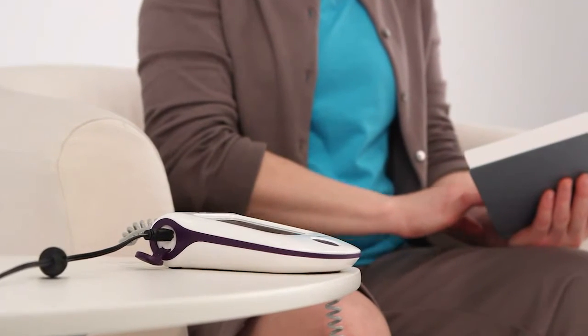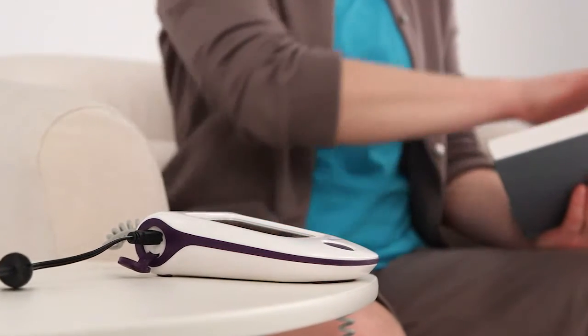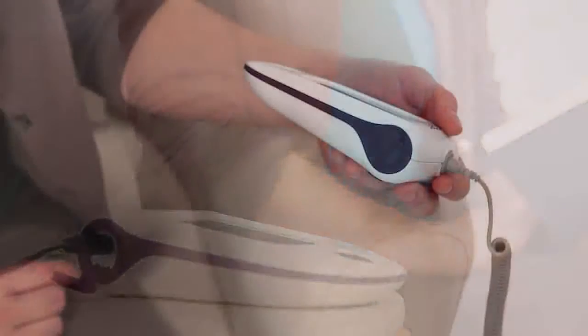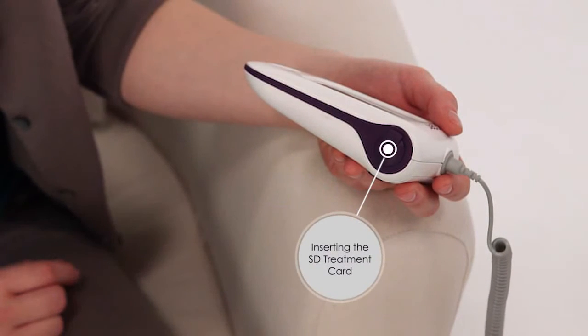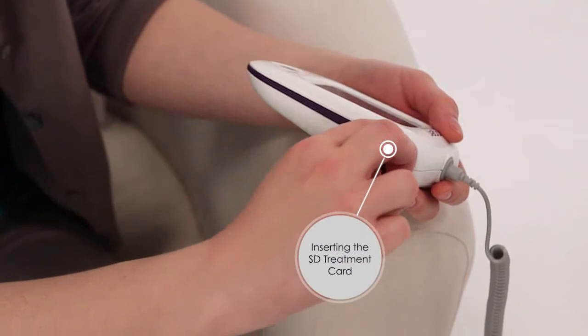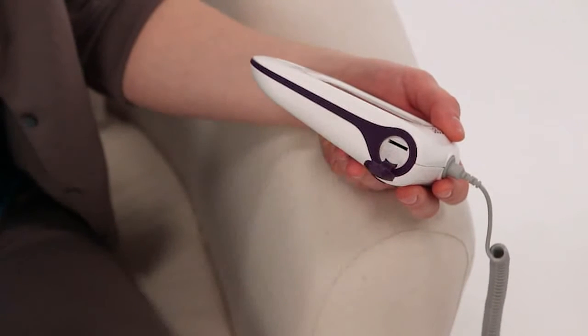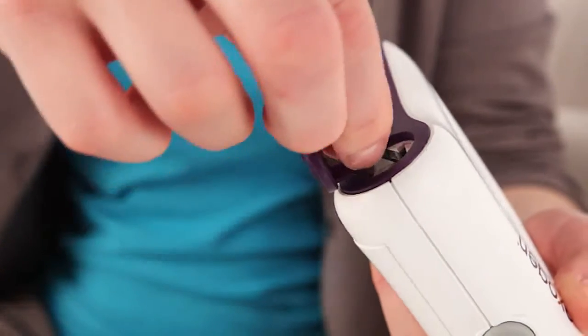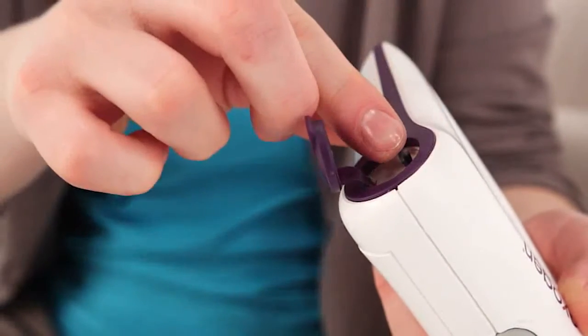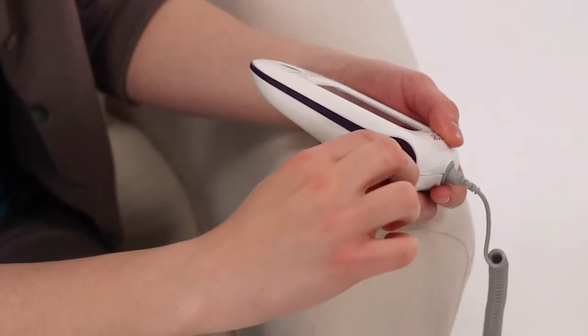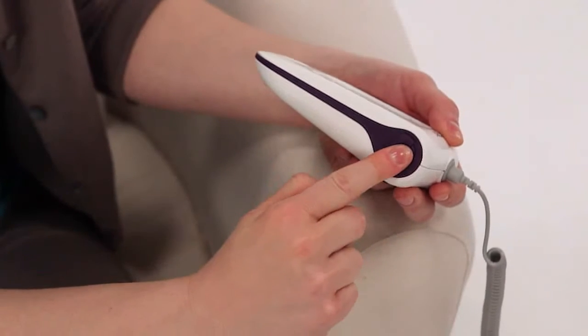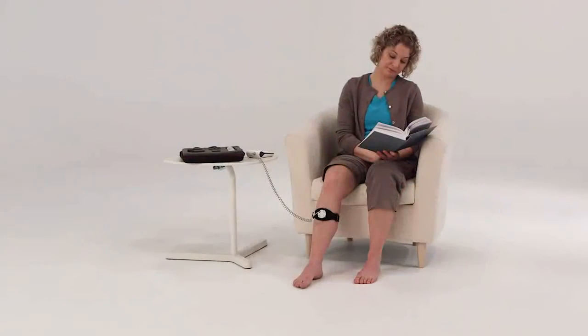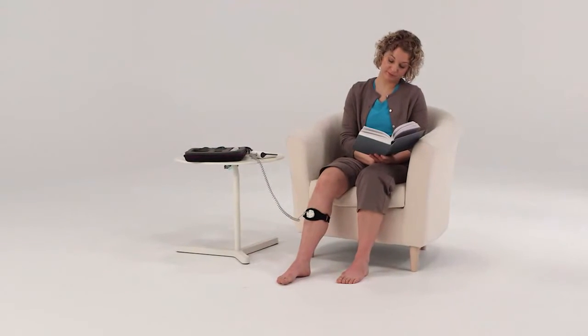After the initial charge, you can recharge your device whenever it is convenient for you, even during the Exogen treatment. After you've charged the battery, open the SD cover on the right side of your Exogen device by pulling down on the tab. Insert the SD treatment card into the SD port with the metal contacts facing up and entering first. Press the card into the port until it clicks into place and close the cover. The card should stay in the device until your course of treatment has been completed.